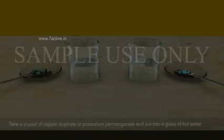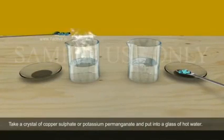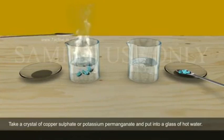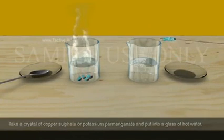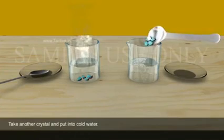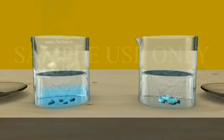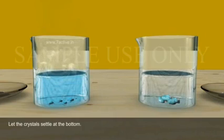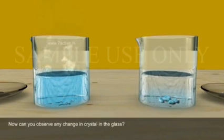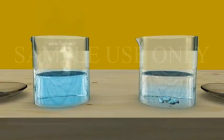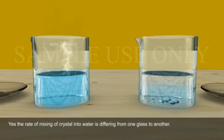Activity three, take a few crystals of copper sulfate or potassium permanganate and put it into hot water and another crystals into cold water. Do not stir the solution. Let the crystals sit in the bottom. Can you observe any change in the glass? Yes, the rate of mixing of crystals into water is differing from one glass to another.